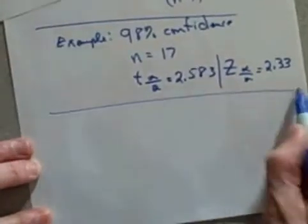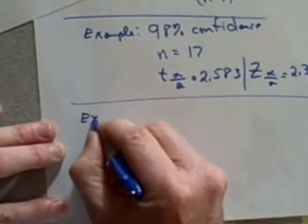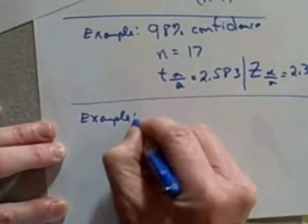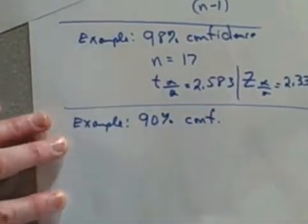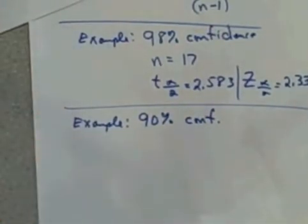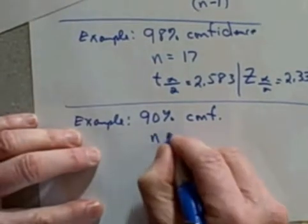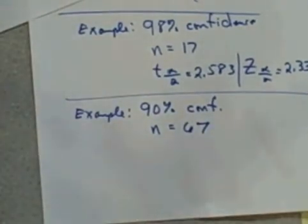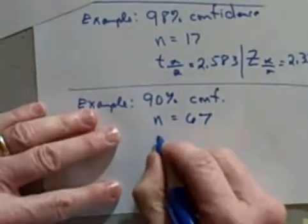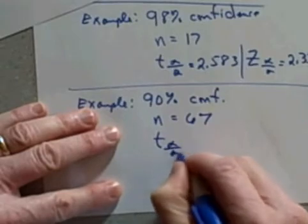All right, let's do another example just to make sure we understand how this table works. Let's say we want to be 90% confident, and let's say we want to have a sample of size 67. I want to know what is my t sub alpha over 2 value.